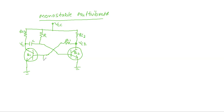For the base terminal of Q1, there is a base resistor R2 which is given a negative VBB supply voltage. This is the circuit diagram of the monostable multivibrator. Q1 is cross-coupled through the output of Q2 transistor via resistor R1, and Q2 transistor is coupled through the output of Q1 transistor via capacitor C.